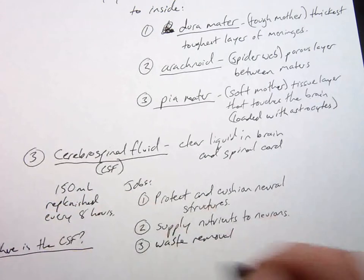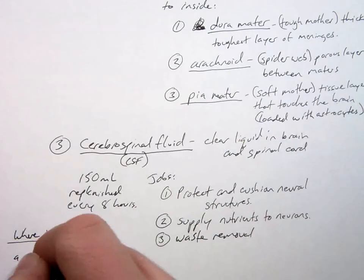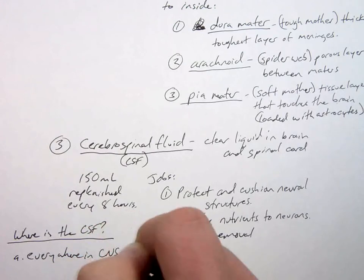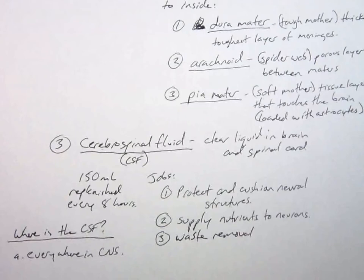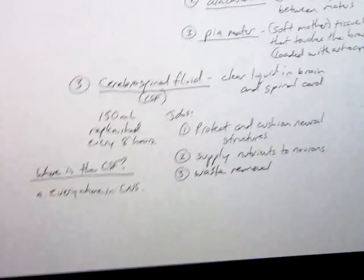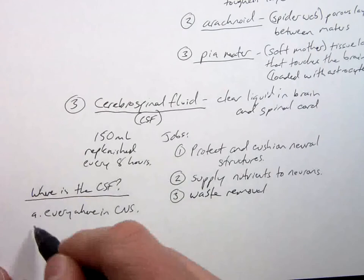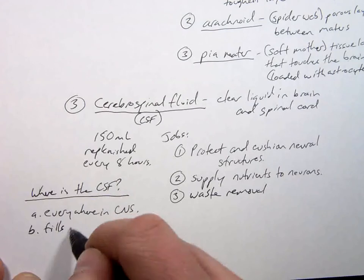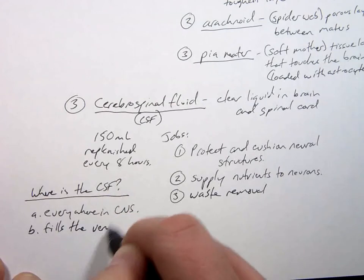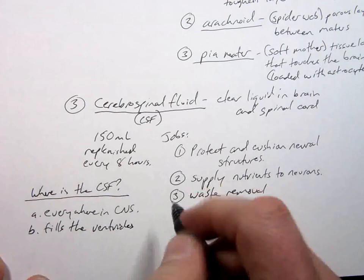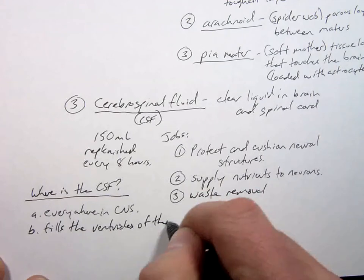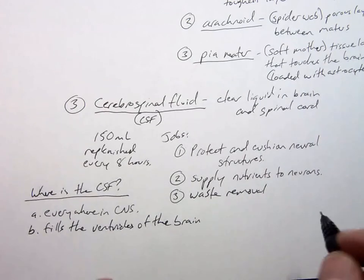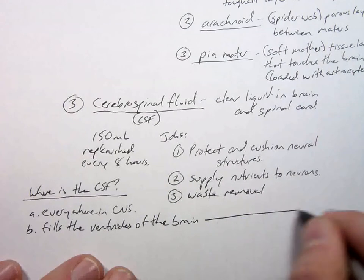So where is the CSF? Short answer: everywhere. Everywhere in the CNS. Not nice to answer an acronym with an acronym, but the cerebrospinal fluid is everywhere in the central nervous system. But where does it pool? It fills the ventricles of the brain.